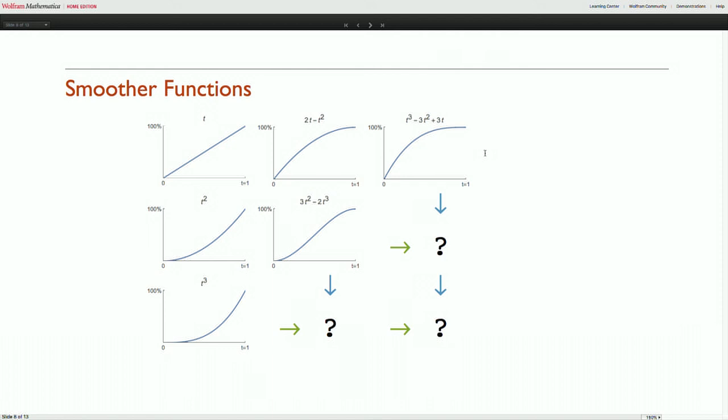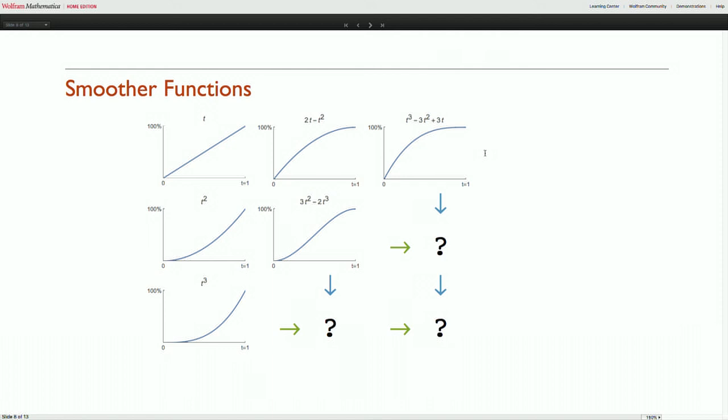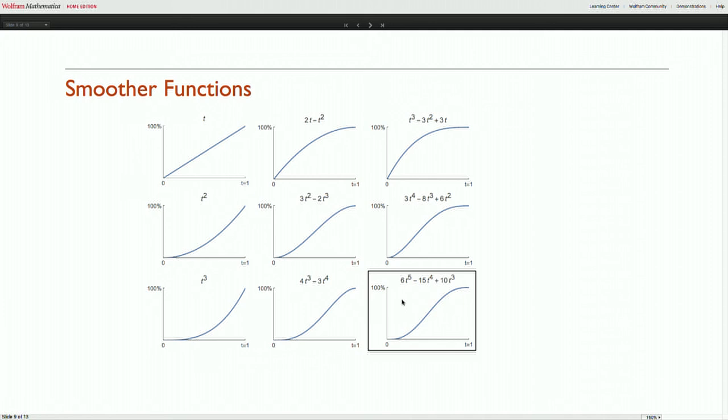So what you can do instead is say, okay we started combining these things. Let's just build up a grid and combine what we have to the left and to the top. This is a bit like a Pascal style triangle thing. And in fact you will get coefficients that come from Pascal's triangle. And down here you'll get a smoother function that has exactly the property we want.